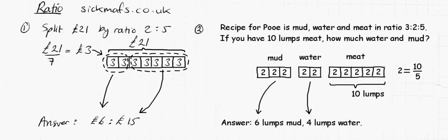Now, we're also told that 10 lumps of meat is thrown in. So how much water and mud should I balance with that, so that I actually get nice poo? Because if I don't have it in the right ratio, or the right quantities, I won't get poo, I'll get something else for some reason.